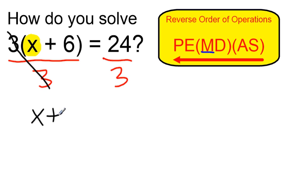So I'm left with simply x plus 6. No need to write the parentheses now because there's nothing else going on. On the other side, 24 divided by 3 is 8.